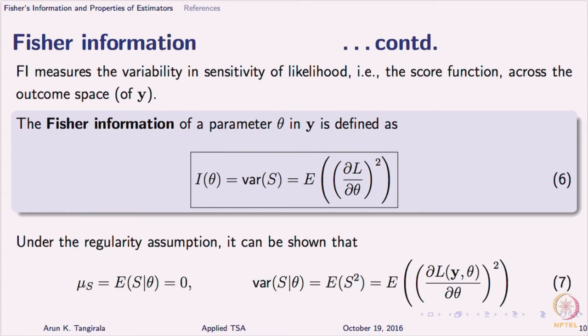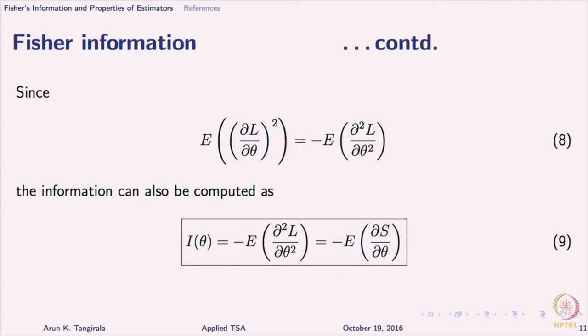The expression for Fisher's information is the expectation of (∂L/∂φ)², the expectation with respect to theta. Under the regularity conditions of PDFs, one can show that the average of the score across the outcome space is zero, and also that the expectation in Fisher's information definition can be rewritten as the negative expectation of the second derivative of the likelihood. The second derivative of the likelihood is a measure of whether you have reached a maximum or minimum.